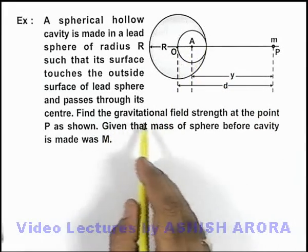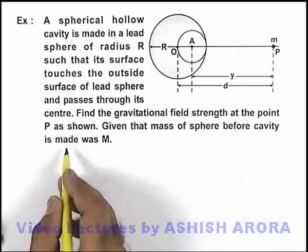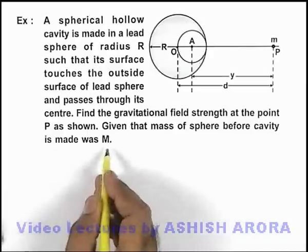We are required to find the gravitational field strength at a point P as shown here, and the mass of the sphere before the cavity was made was M.